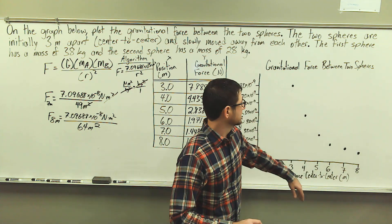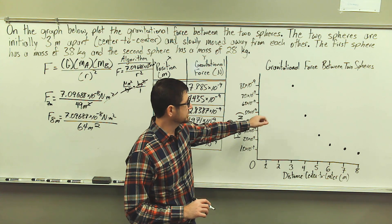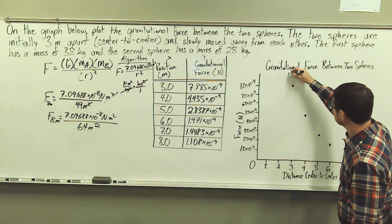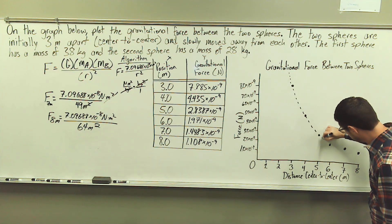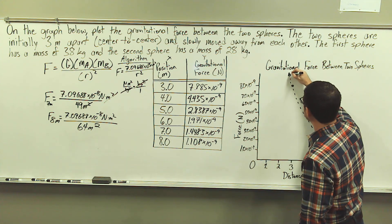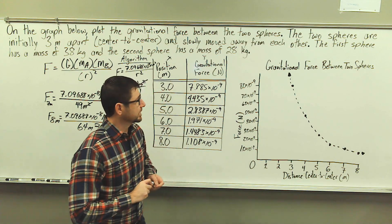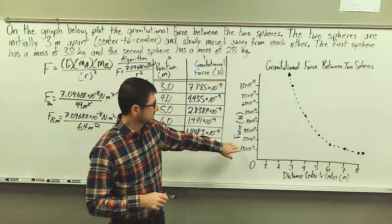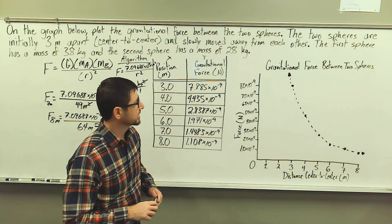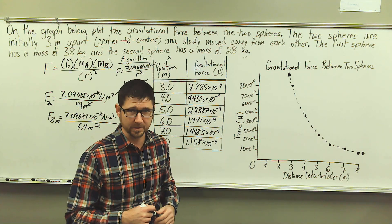As you can see, we do not have a linear relationship — we have an inverse square relationship. Let's create a line of best fit using the dashed line. If we were to describe the relationship, we have an inverse square relationship between the gravitational force and the center-to-center distance between the spheres, and the shape of our graph is a hyperbola.